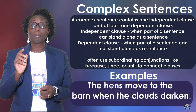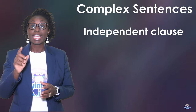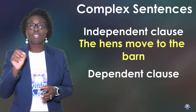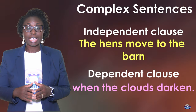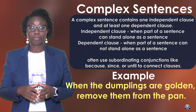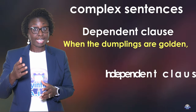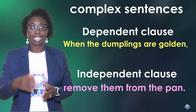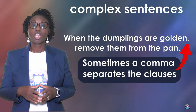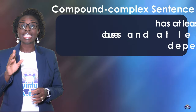Let's look at some examples. 'The hens move to the barn when the clouds darken.' The independent clause is 'the hens move to the barn.' The dependent clause is 'when the clouds darken.' Another example: 'When the dumplings are golden, remove them from the pan.' The dependent clause is 'when the dumplings are golden.' The independent clause is 'remove them from the pan.' Sometimes a comma separates the clauses.